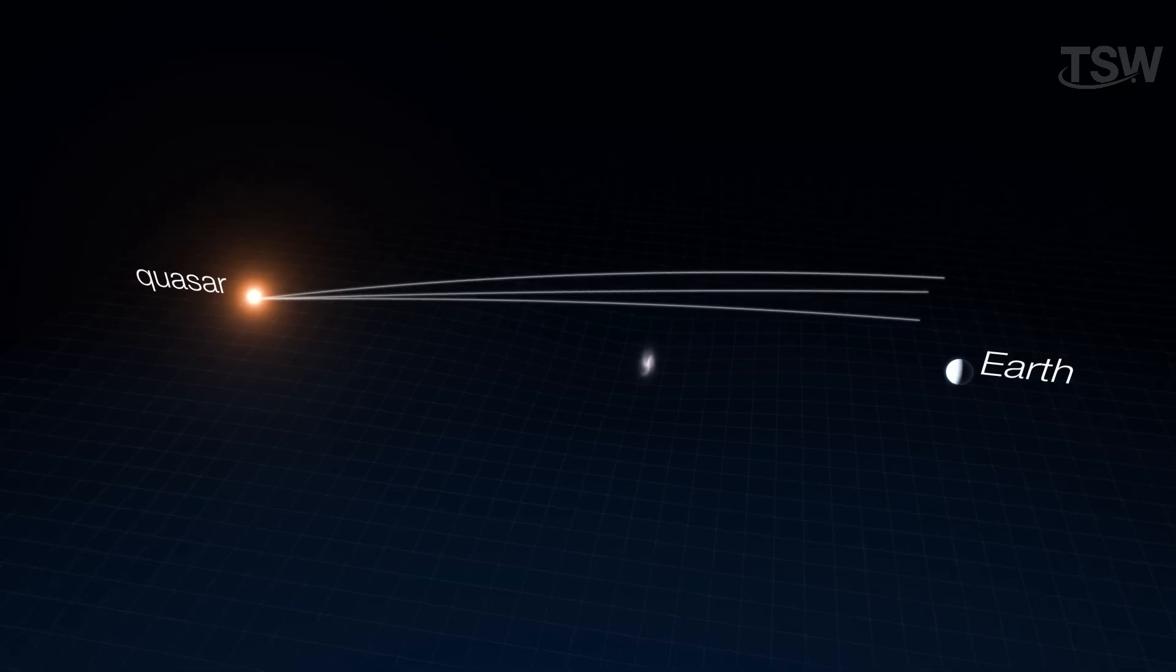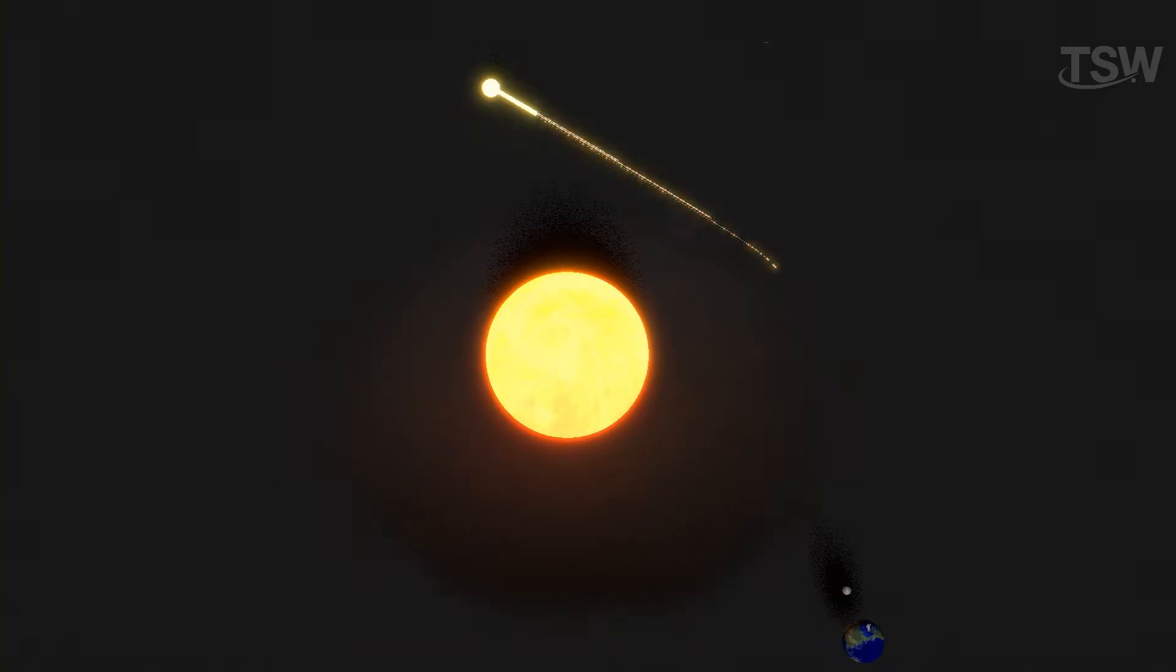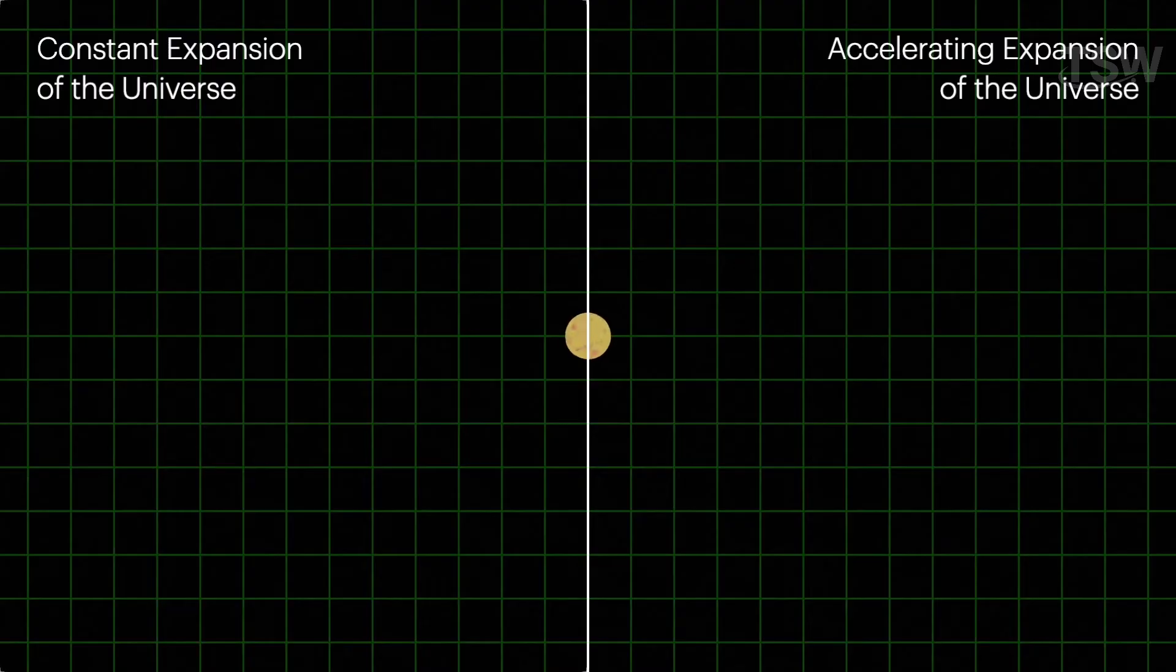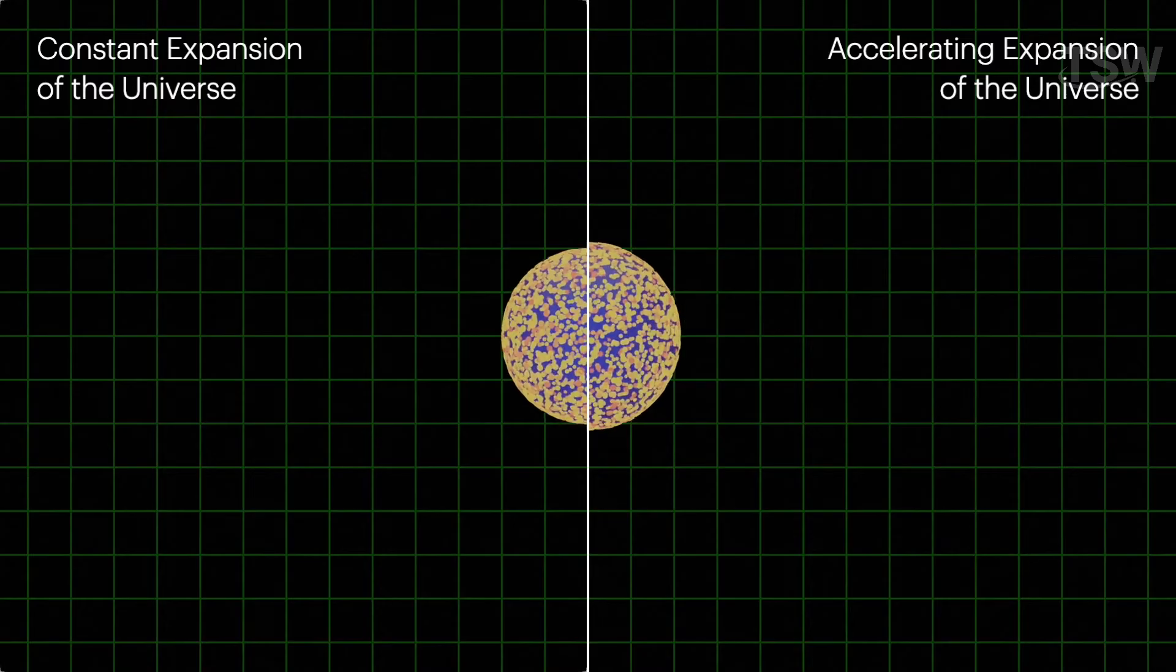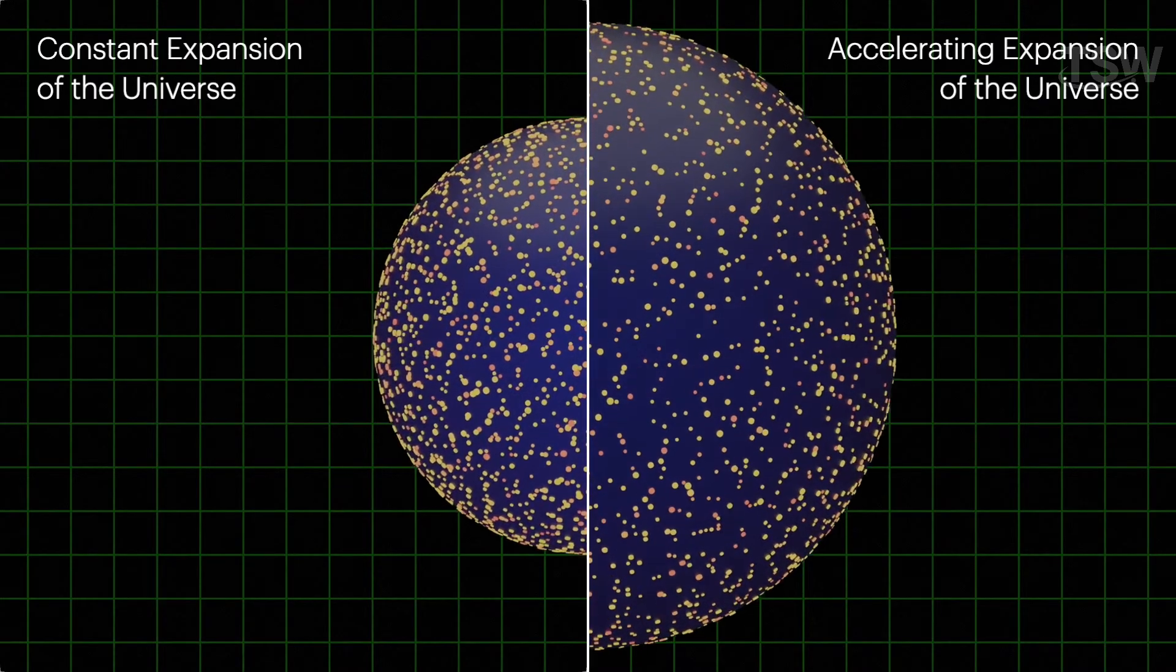But the uses don't stop there. These lenses also play a key role in measuring the expansion of the universe. When we're able to observe objects at various distances with great precision, we can also calculate more accurately how fast the cosmos is expanding. It's like measuring the distance between two moving cars to figure out their speed, except on a cosmic scale.